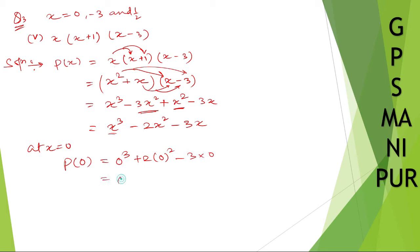0 cube is 0, 2 into 0 square is 0, and 3 into 0 is 0. So 0 plus 0 plus 0 — it will be 0.